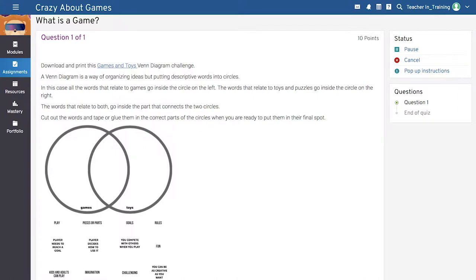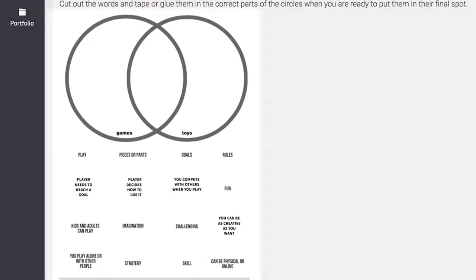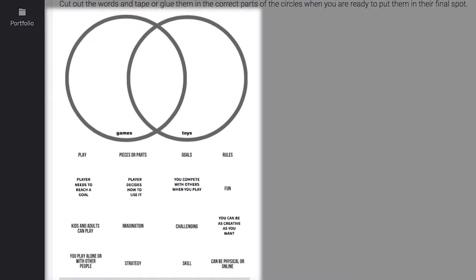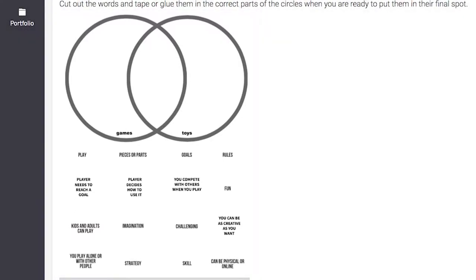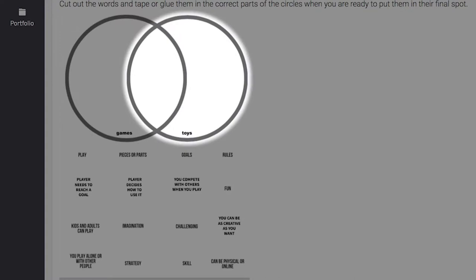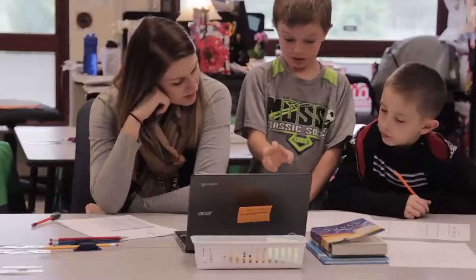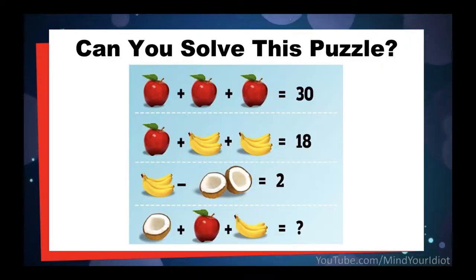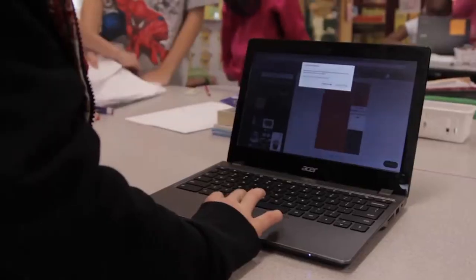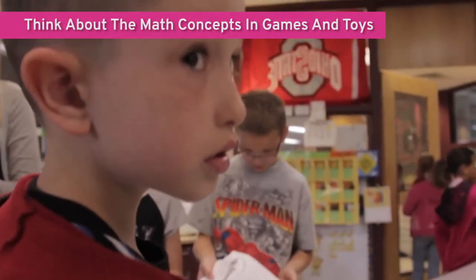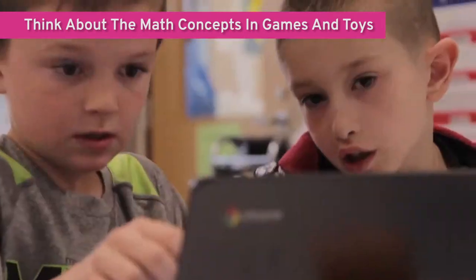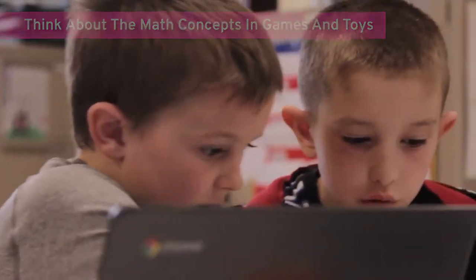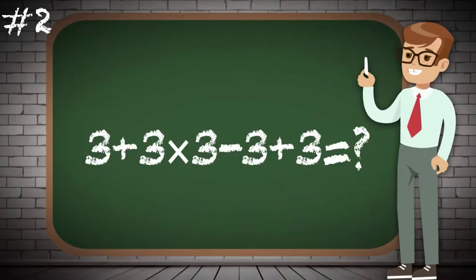Moving on to lesson two. During lesson two, students work on the Games and Toys Venn Diagram Challenge to sort a set of words and descriptions into three groups, depending on whether they are characteristics of games, toys, or both. Ask students during the brainstorming activity to come up with math games, puzzles, and toys in their list, and ask them to think about the math concepts covered in the games, puzzles, and/or toys.